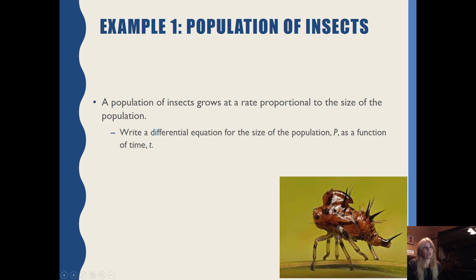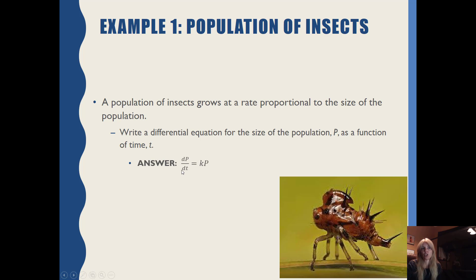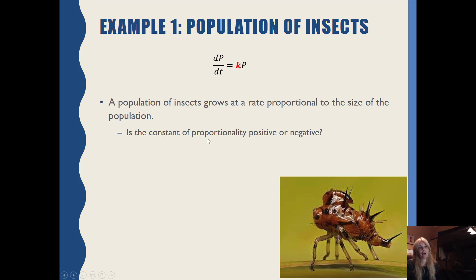A population of insects grows at a rate proportional to the size of the population. Writing a differential equation for the size of the population P as a function of time: the change in population over change in time equals K times the current population, where K is my proportionality constant. This is just like our last example — 2% of the population. Since the population is growing, the constant of proportionality K is positive.